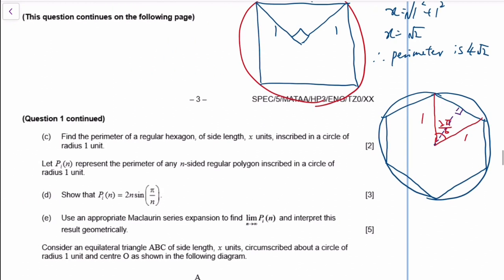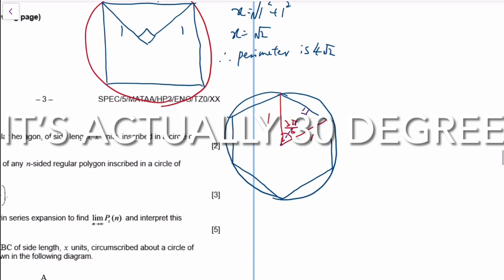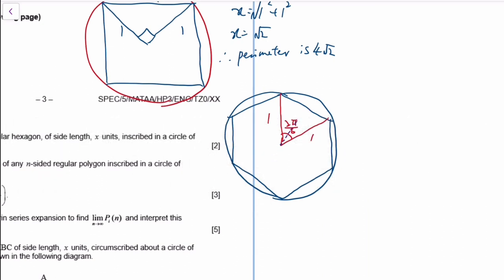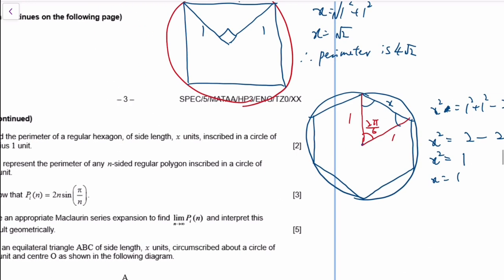Cut it in half — actually, if I cut it in half it will become 15 degrees, and 15 is not a special angle. So I guess the cosine rule is a better choice this time. So: x² = 1² + 1² − 2(1)(1)cos(π/3). This is 2 minus 2·cos(60°) = 2 minus 2·(1/2) = 2 minus 1 = 1. Of course — it's a hexagon: the triangles are equilateral. So the perimeter is 6.